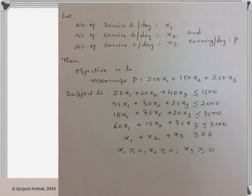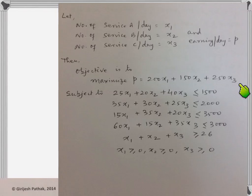Let the number of services A per day be x1. Similarly, service B per day is x2 and service C per day is x3. Earning we denote by P. Looking at the data, revenue or earning per day will be equal to 200x1 plus 150x2 plus 250x3. These three values — 200, 150, and 250 — are the earning on services A, B, and C.